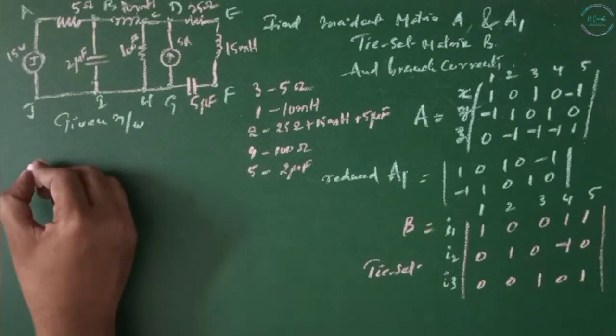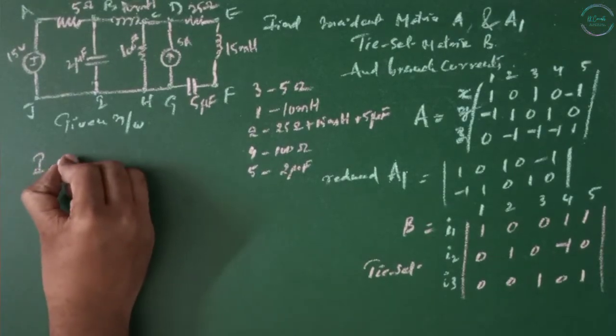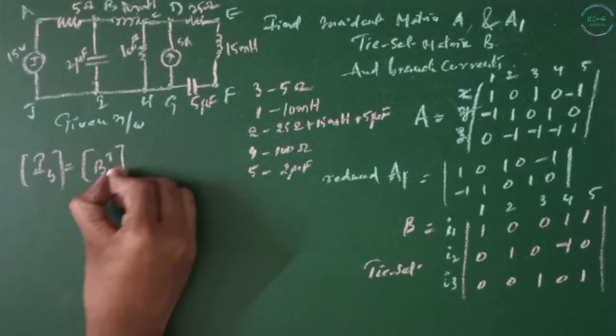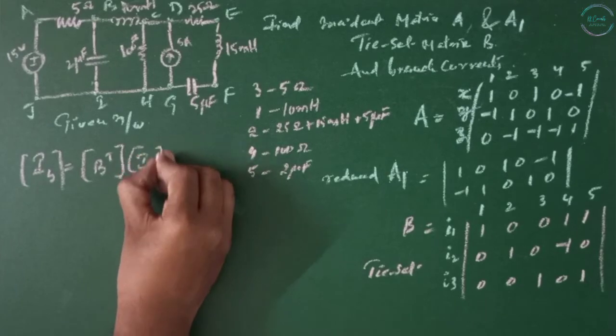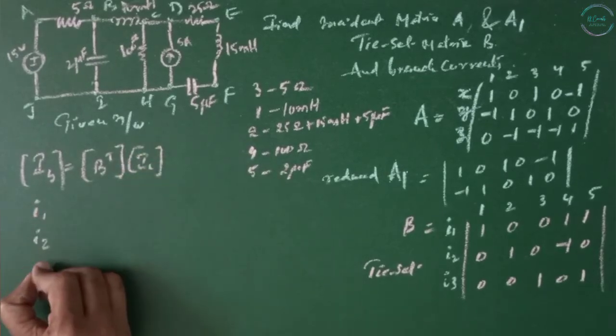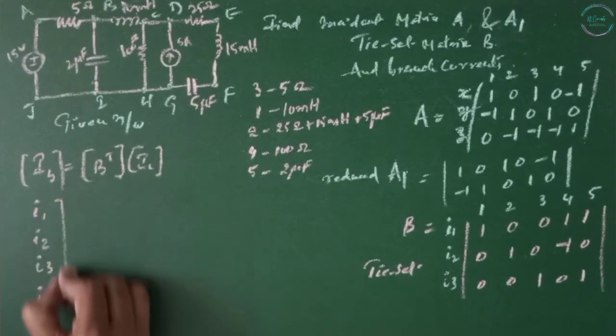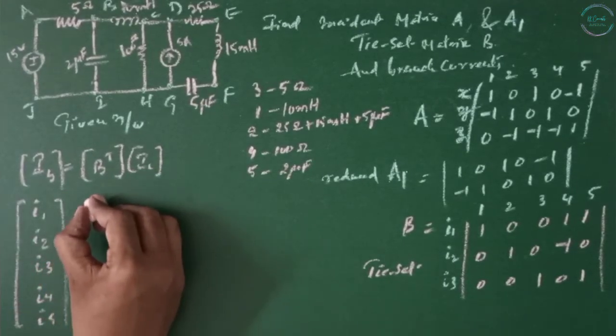Now need to find out the current branch equations which is given by IB equals B transpose of IL: I1, I2, I3. I4, I5, 5 branches are connected.